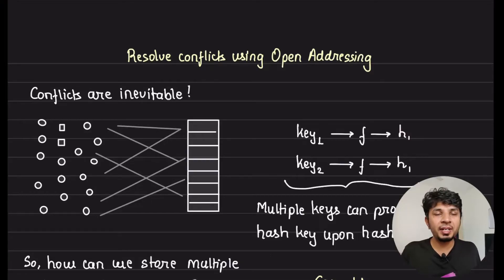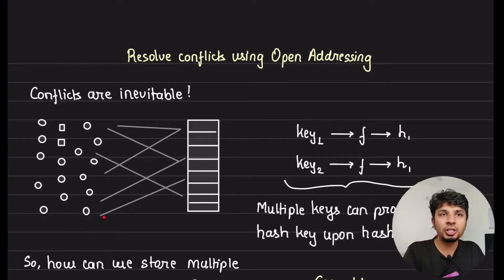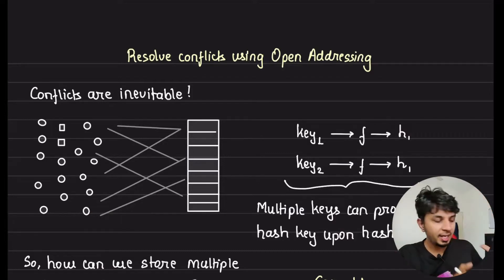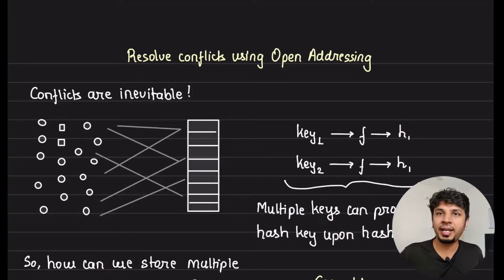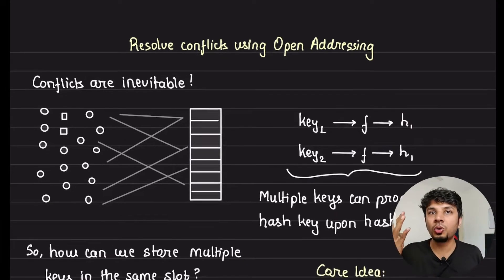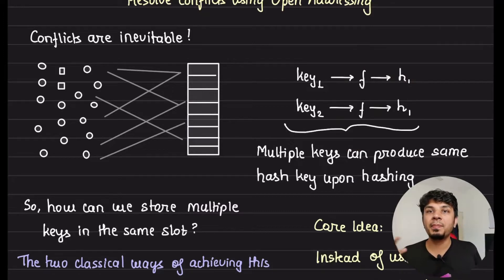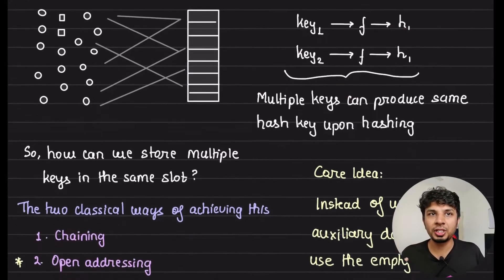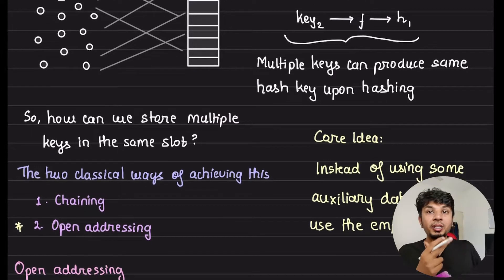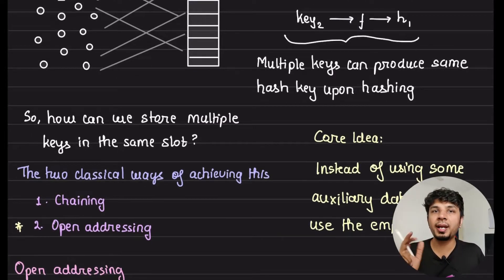Conflicts are inevitable in hash tables as we are trying to map a large set of application keys into a smaller range of your hash table. When you pass different keys through the same hash function you might end up with the same hash key, which is what causes the collision. In the previous video we looked at chaining as a way to handle collisions; in this one we look at open addressing.